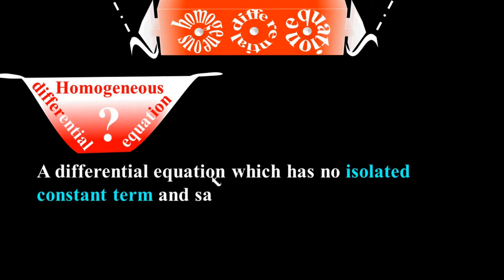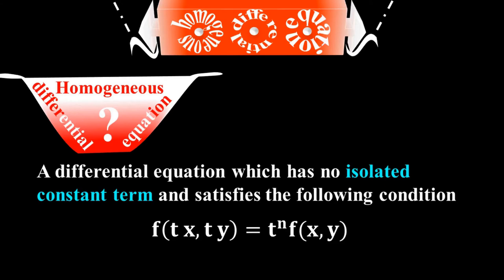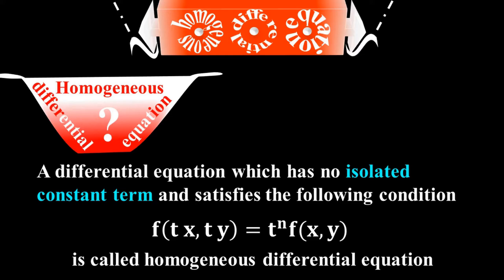A homogeneous differential equation has no isolated constant term and satisfies: f(tx, ty) = tⁿ · f(x, y). We must check two things: first, the equation should have no isolated constant term — all terms must have variables or products of variables. n is a number such as 1, 2, 3, and so on.